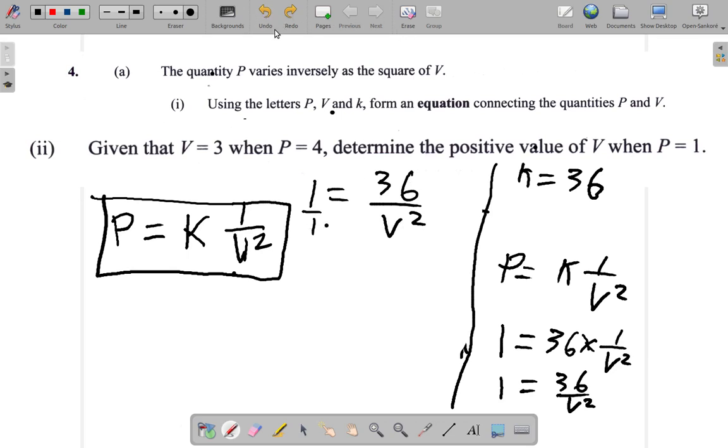You could use a technique that we call cross multiply. But it's the same thing as multiplying both sides by V squared. So if you multiply by V squared, you multiply by V squared. V squared cancel itself. On the right-hand side, you have 36 alone. But what happened on the left? You multiply by V squared as well. So V squared is equal to 36.